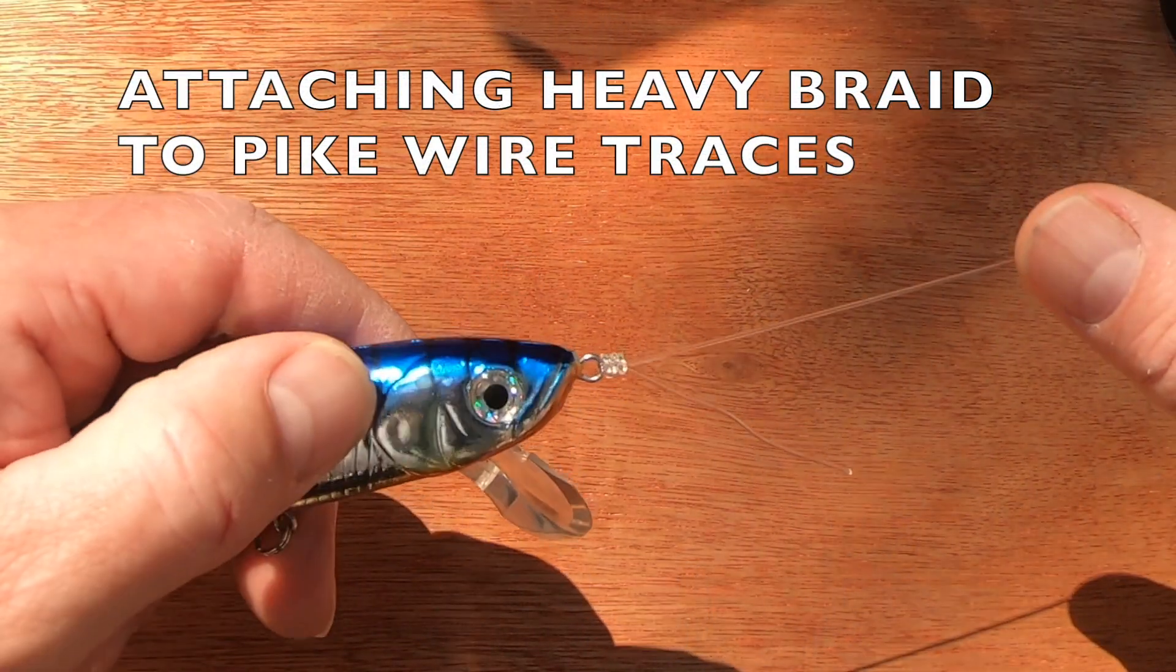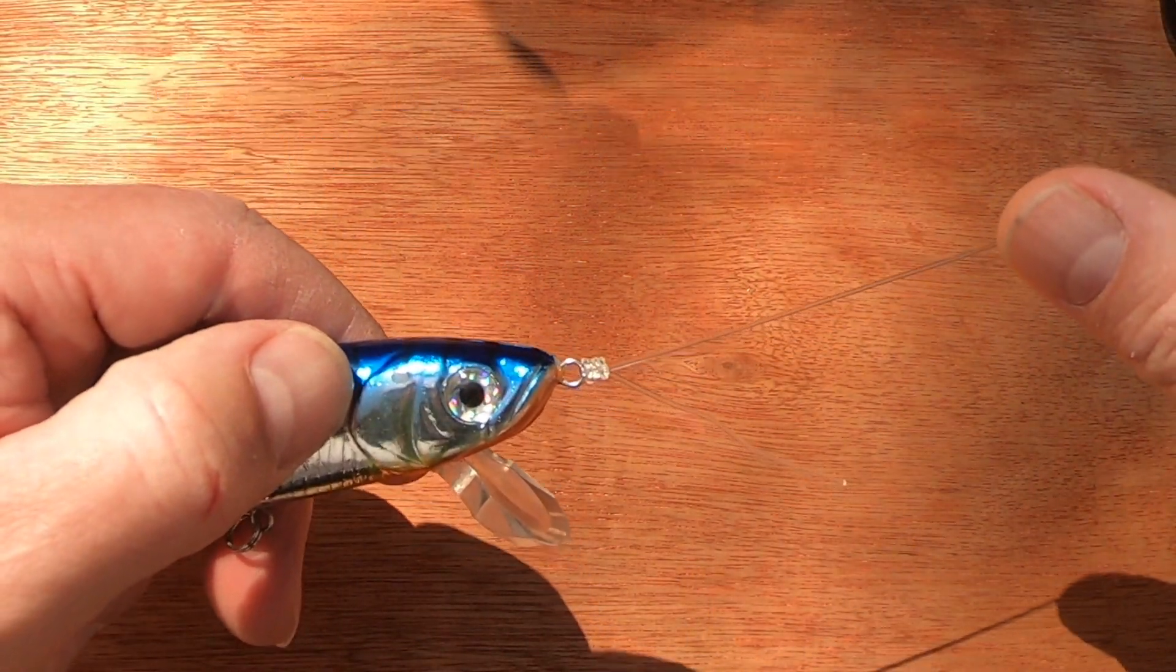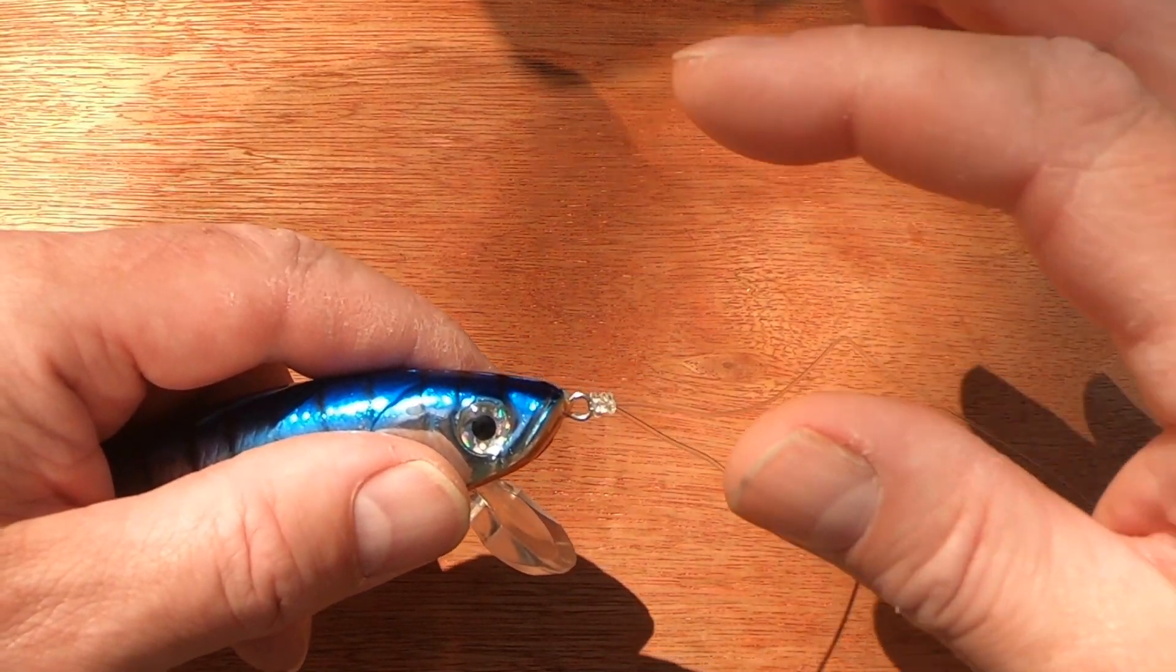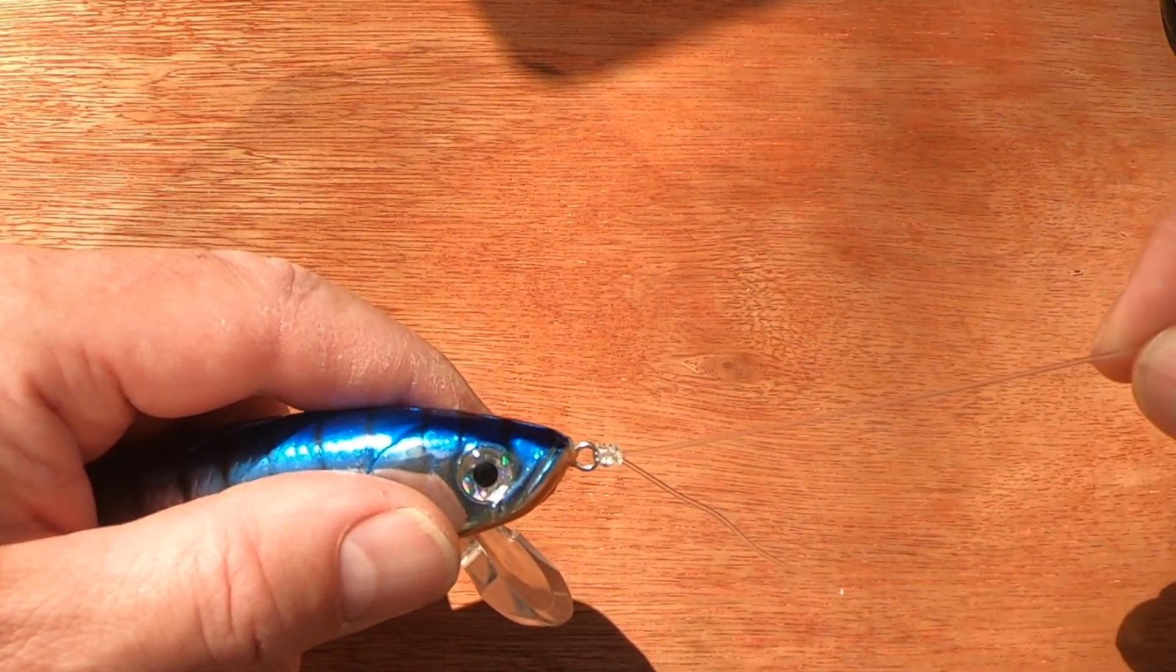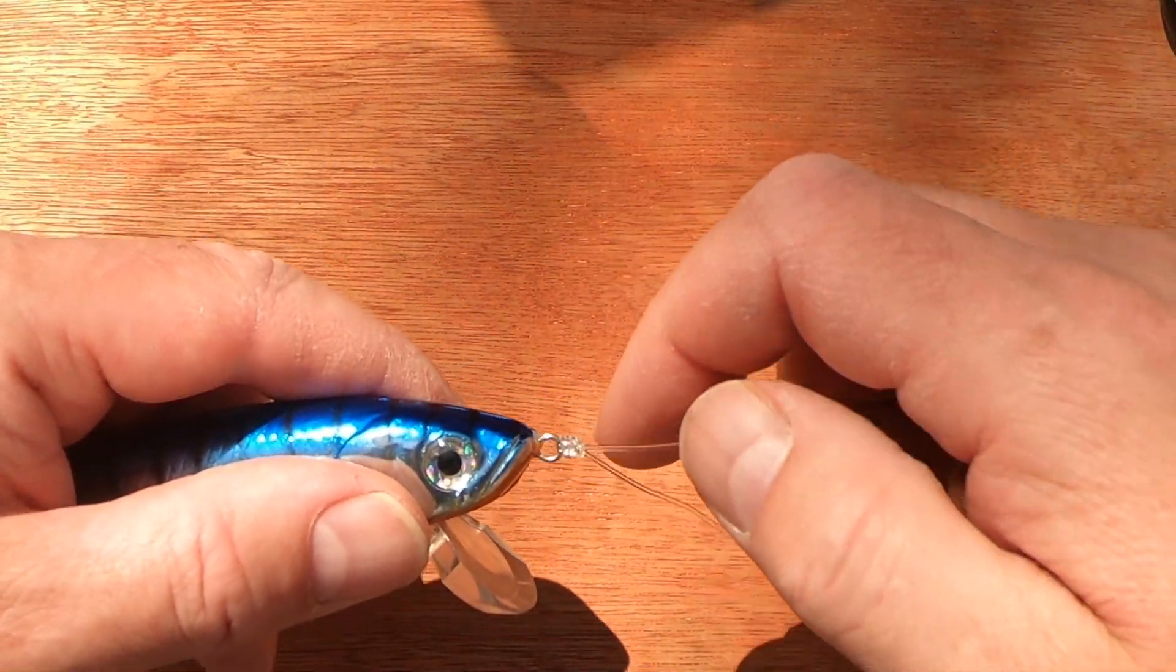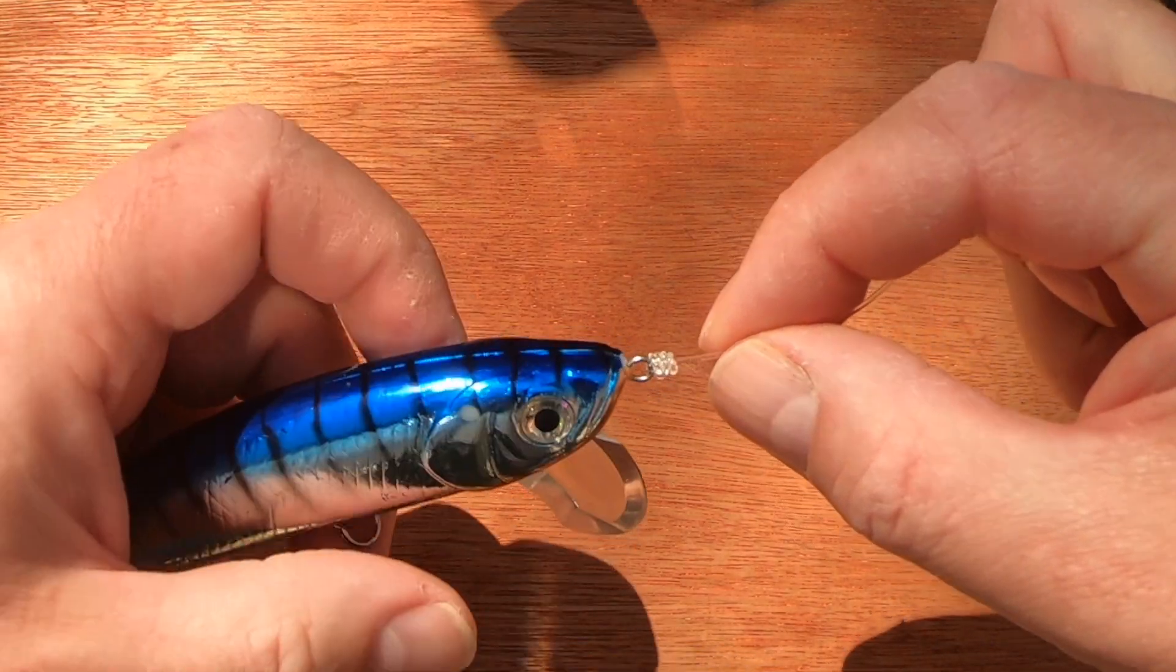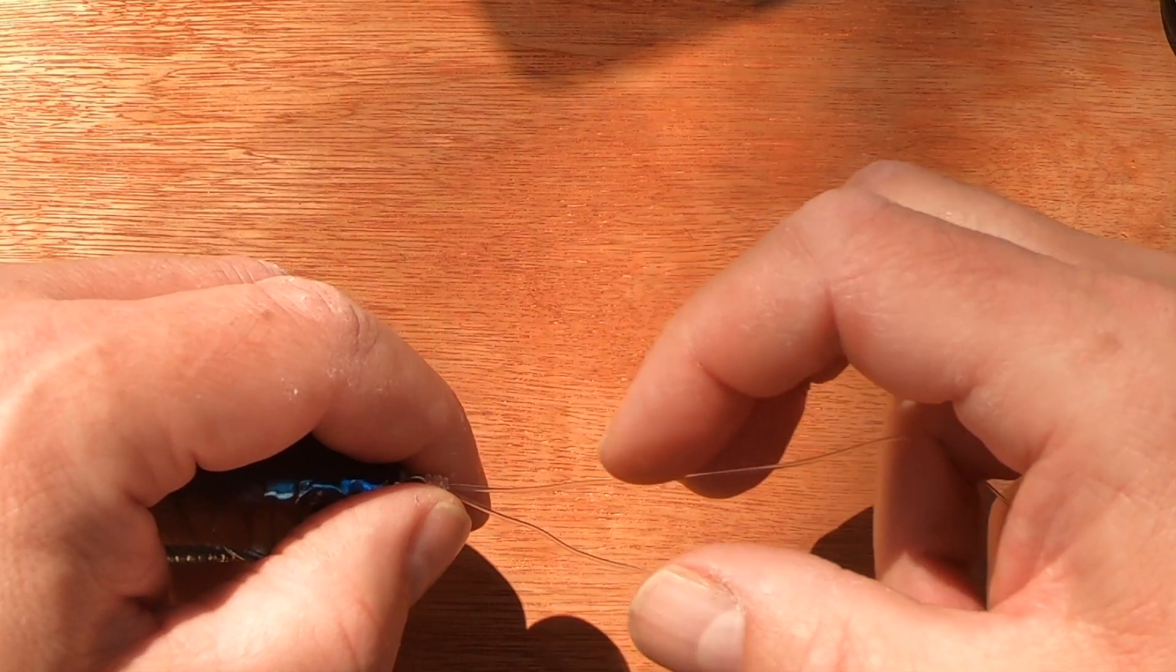That knot I use for all my wrasse fishing, tying hooks on for soft plastics. I would use it for tying big hooks on if I'm using pulley rigs or anything like that, larger sizes of hooks. Very small freshwater hooks I don't use the Grinner knot on, it's a different knot I will show you another day.